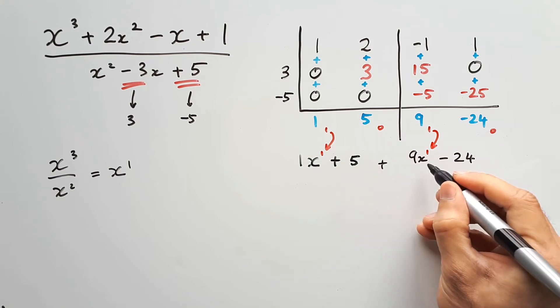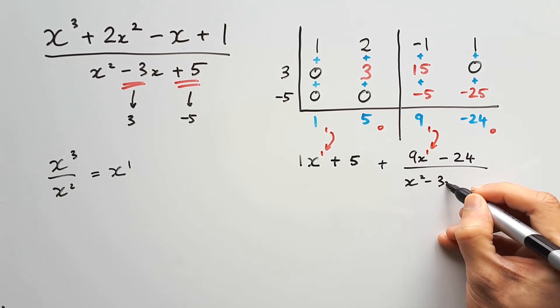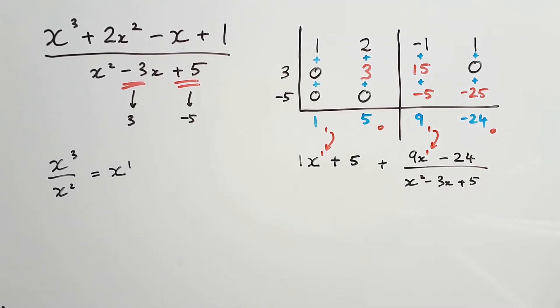Add those together, making sure you divide your remainder by the original quadratic, x squared minus 3x plus 5, and that's your answer.